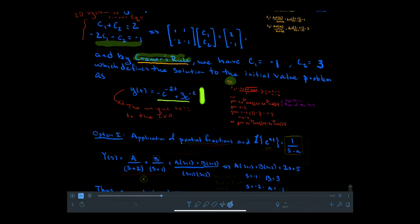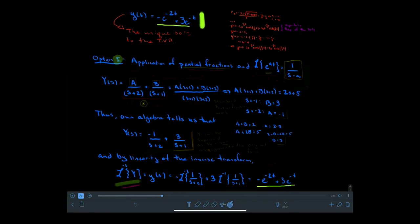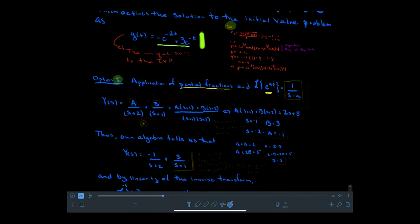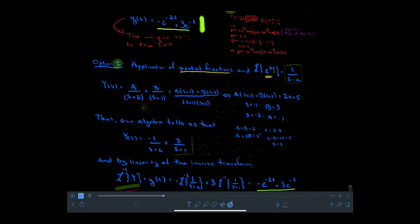Now let's look at option one: the application of partial fractions. We need to use partial fractions because, with Laplace transforms, exponential functions in the time domain map to these terms — specifically 1 over S minus A, which could be described as a hyperbola, or reciprocal power function, or power function with negative exponent — all terms I've used to describe that 1 over S minus A form.